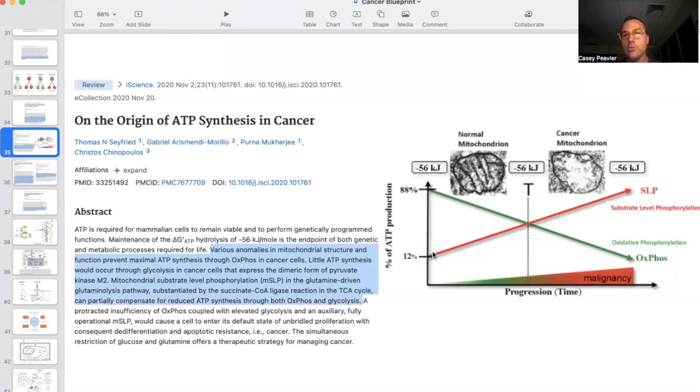Cancer, however, goes from 12% in a normal cell of SLP, substrate-level phosphorylation. Don't worry about what it means yet. But it's a different way of making energy in the cells, and it starts to become the dominant way that energy is produced in the cell of a cancer cell. This is a normal mitochondria, electron micrograph, and this is what a cancer mitochondria look like. So you can tell they're not the same.